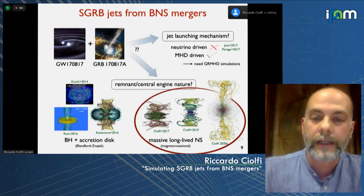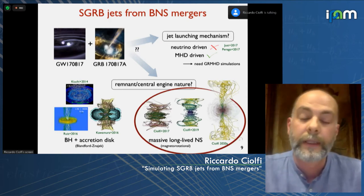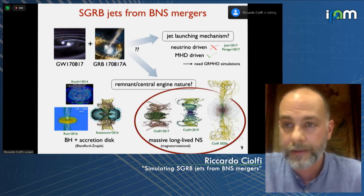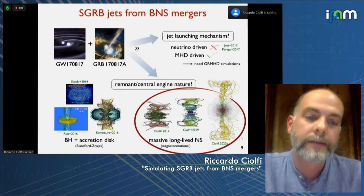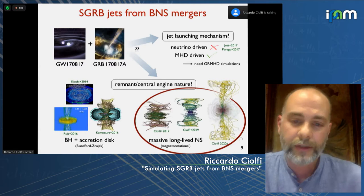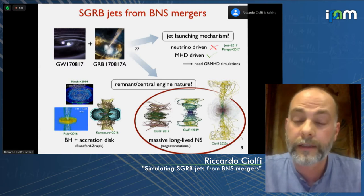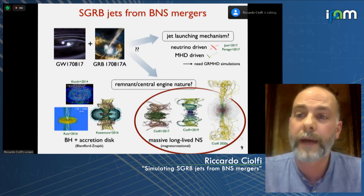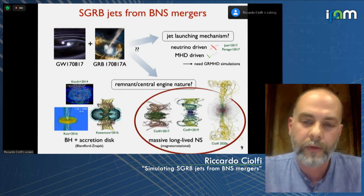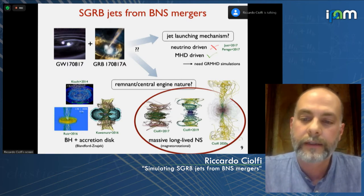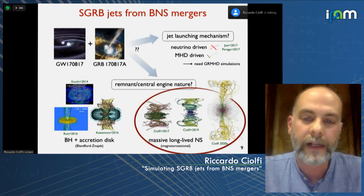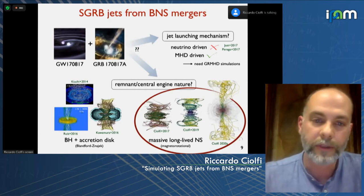The alternative scenario — the long-lived massive neutron star — was not attracting much attention in earlier years until we decided to start a first systematic investigation, with the first paper coming out in 2017, in terms of magnetized binary star merger simulations. We worked on this problem for a few years and continued until the last paper published last year. This is what I want to talk about in more detail now.